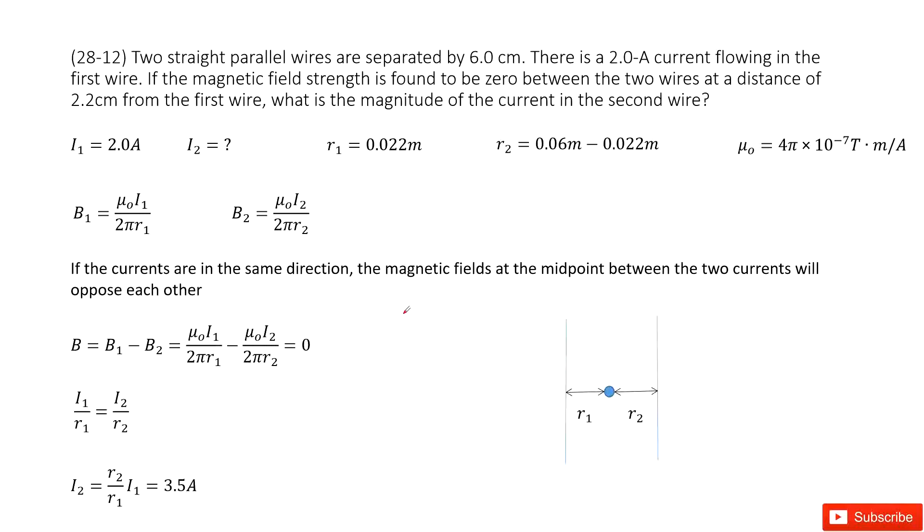So there we have two straight parallel wires. The distance between them is given as 6 cm. And then we know the current for the first wire i1 is given. We need to find i2 to make sure